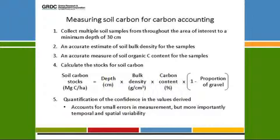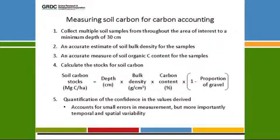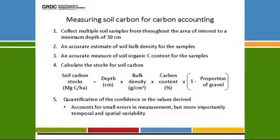How do we measure it? First, you've got to define the area of interest. You've got to collect multiple samples out of it, and those samples have to be to a minimum depth of 30 centimeters — that can go deeper, but 30 cm is the minimum. You need an accurate estimate of soil bulk density. Carbon trading is done in tons per hectare — a unit mass of carbon per unit area of land surface. To convert our soil carbon measurements from the lab into an area basis, we need bulk density.